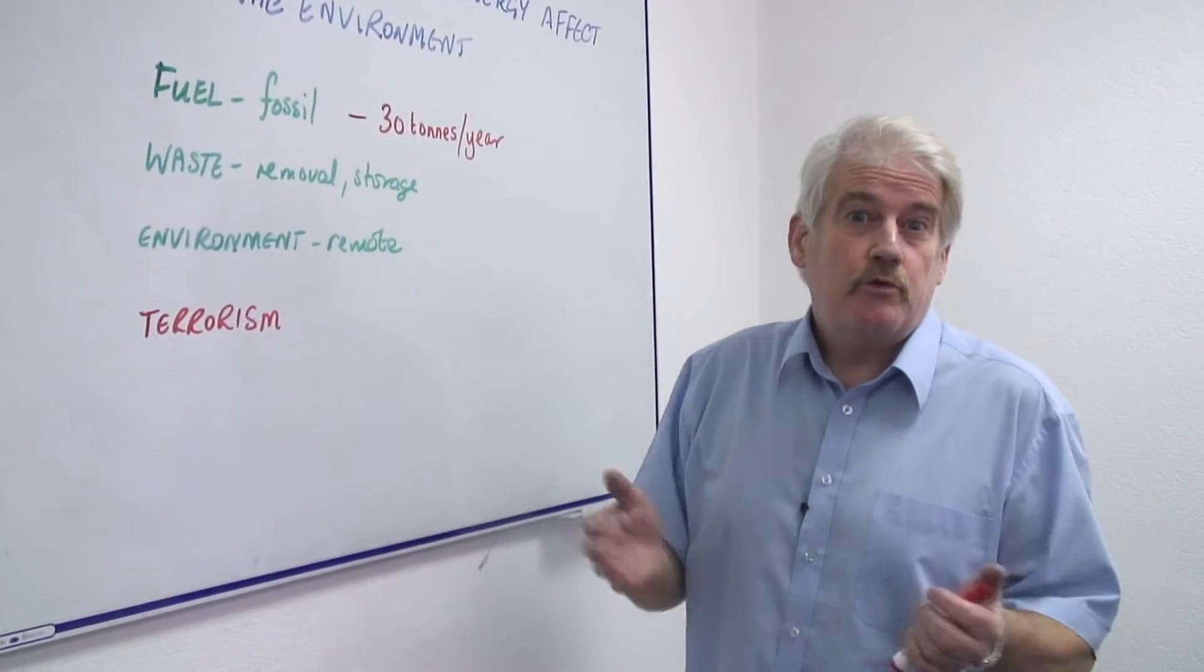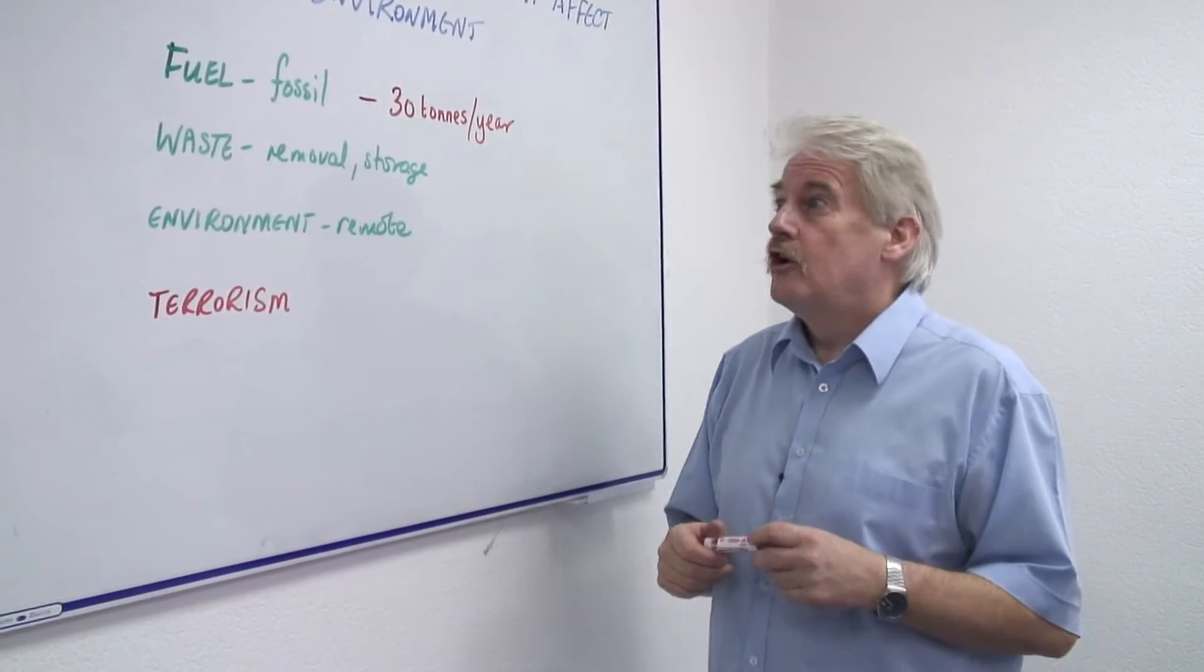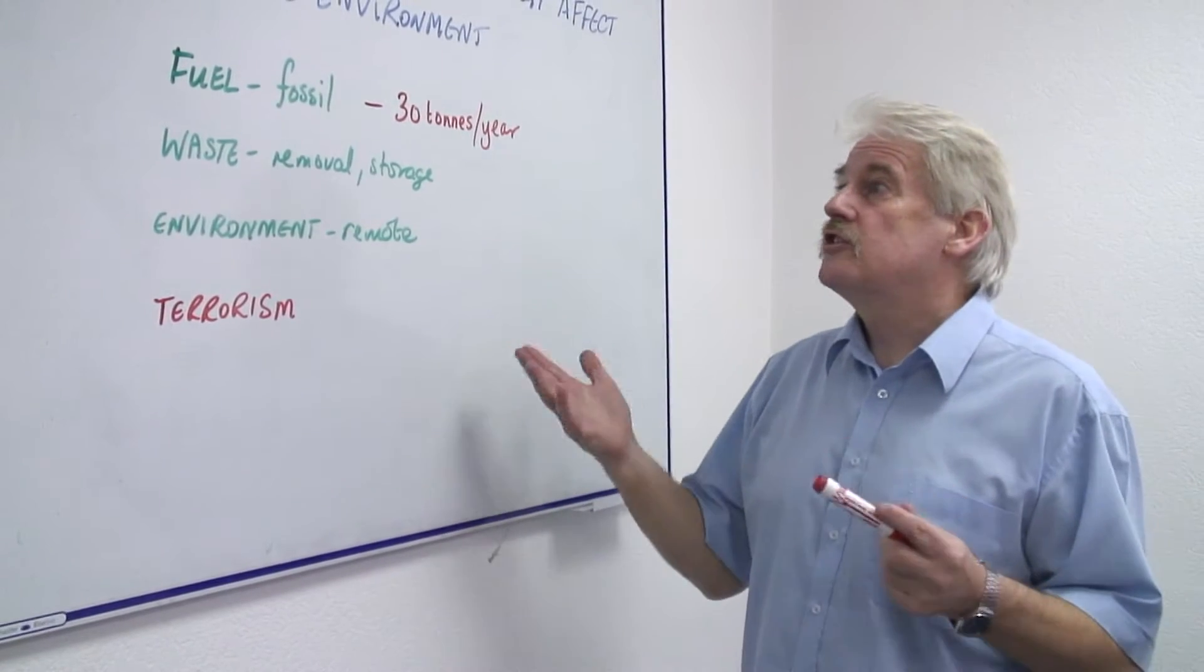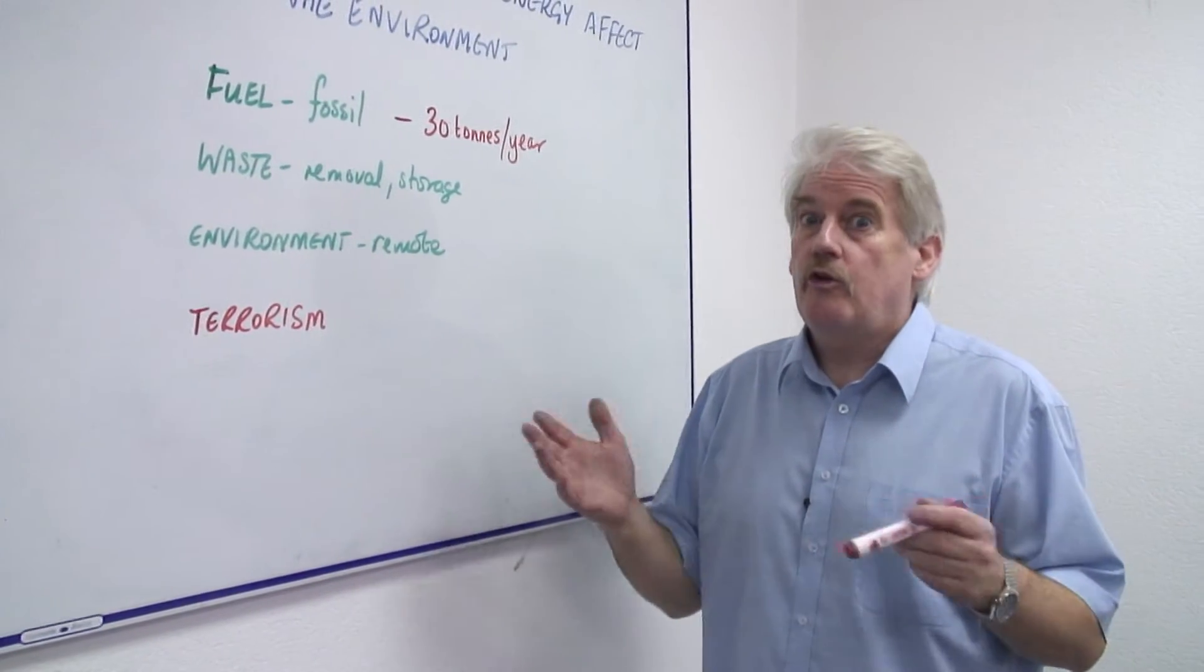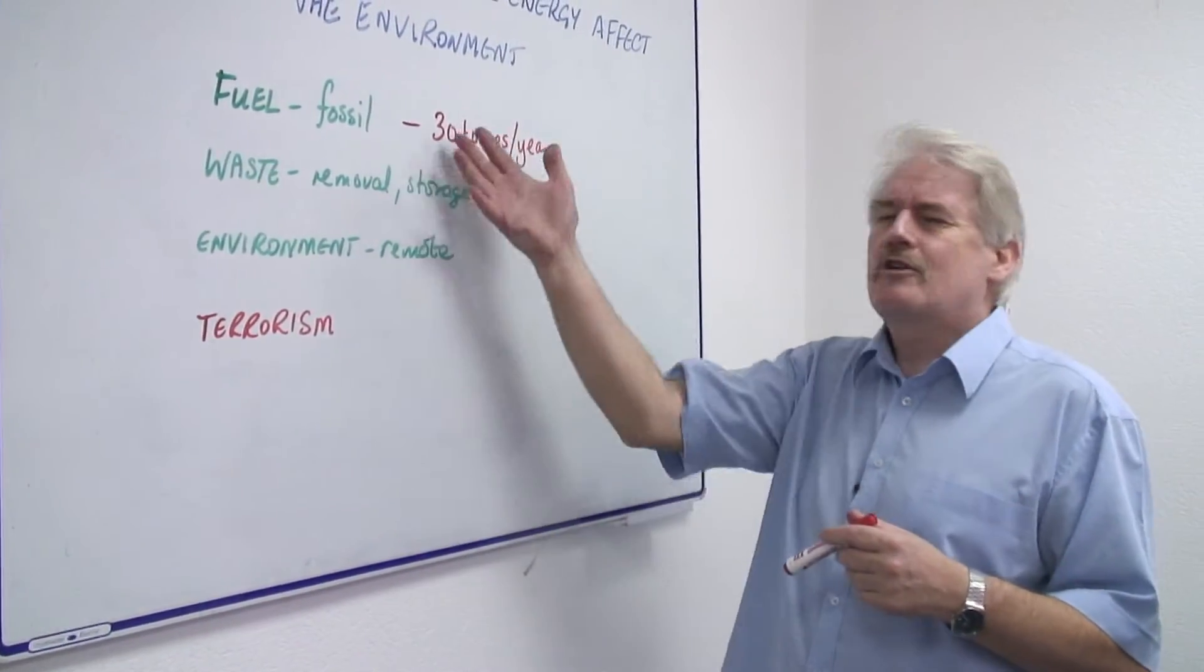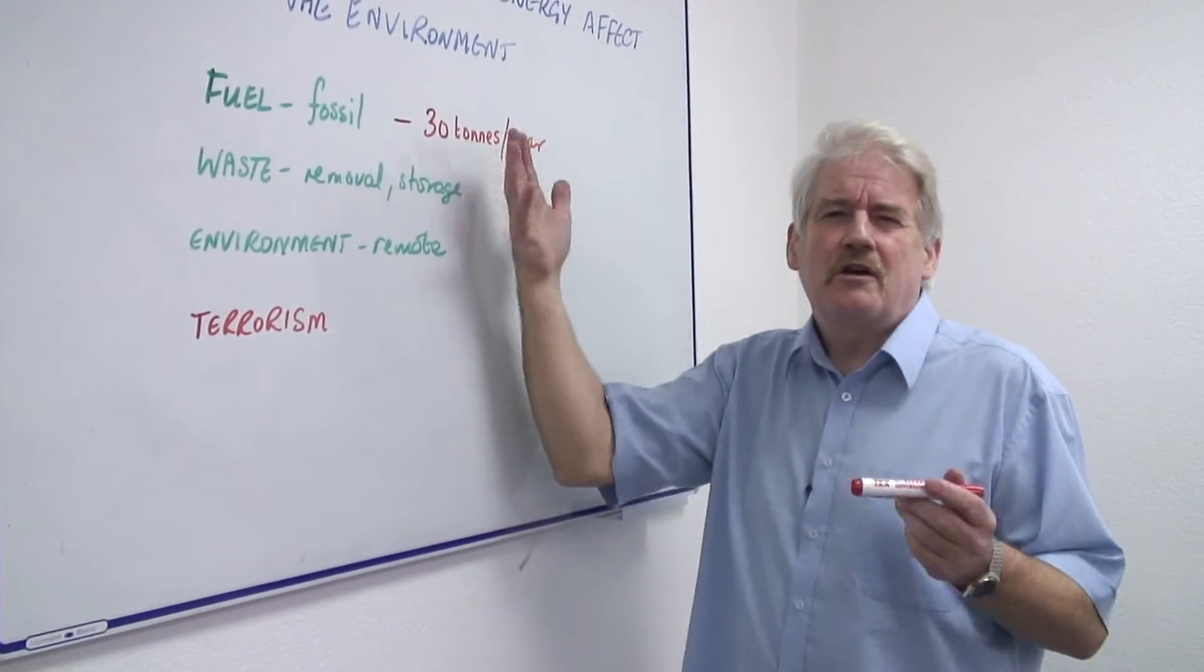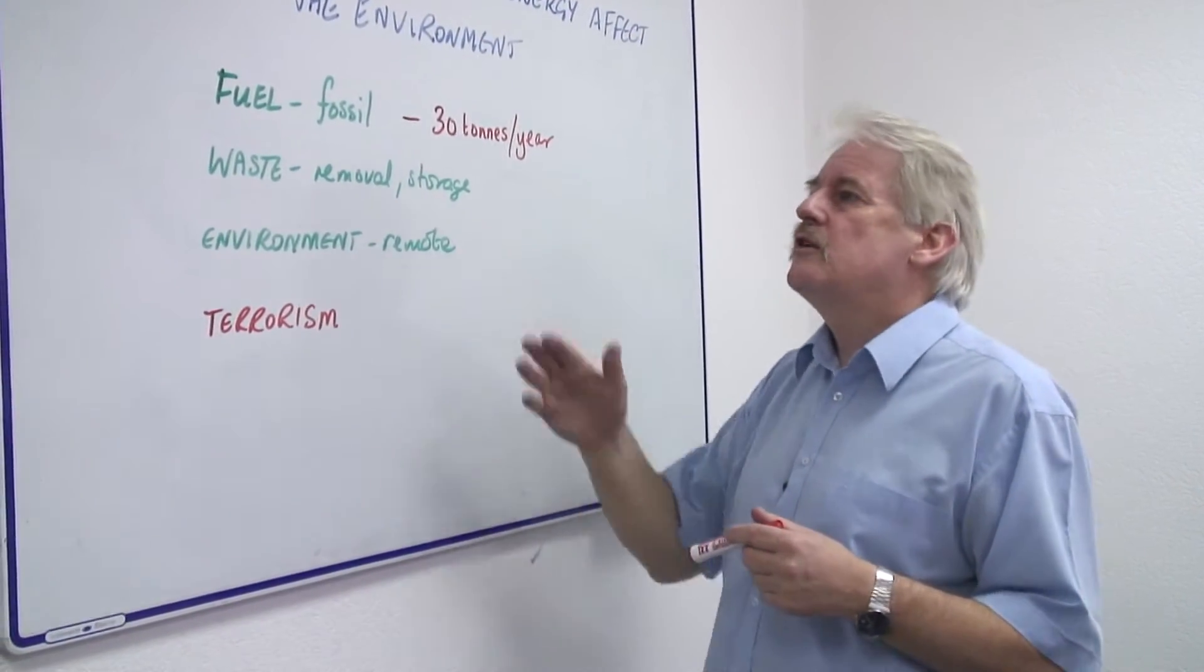If you compare, for example, with a coal-fired power station, you're talking about over a million tonnes of coal a year for a coal-fired power station. We're talking about 100 tonnes, 200 tonnes of uranium waste.